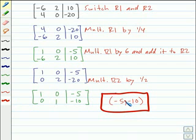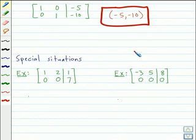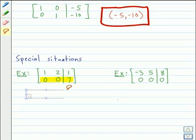Now to wrap things up, let's talk about some special situations that come up when using augmented matrices to solve systems of equations. The first one is where you have zeros in the coefficient part of a row and another number in the constant part. Zero does not equal seven, so we could say that a system like this would have no solution.